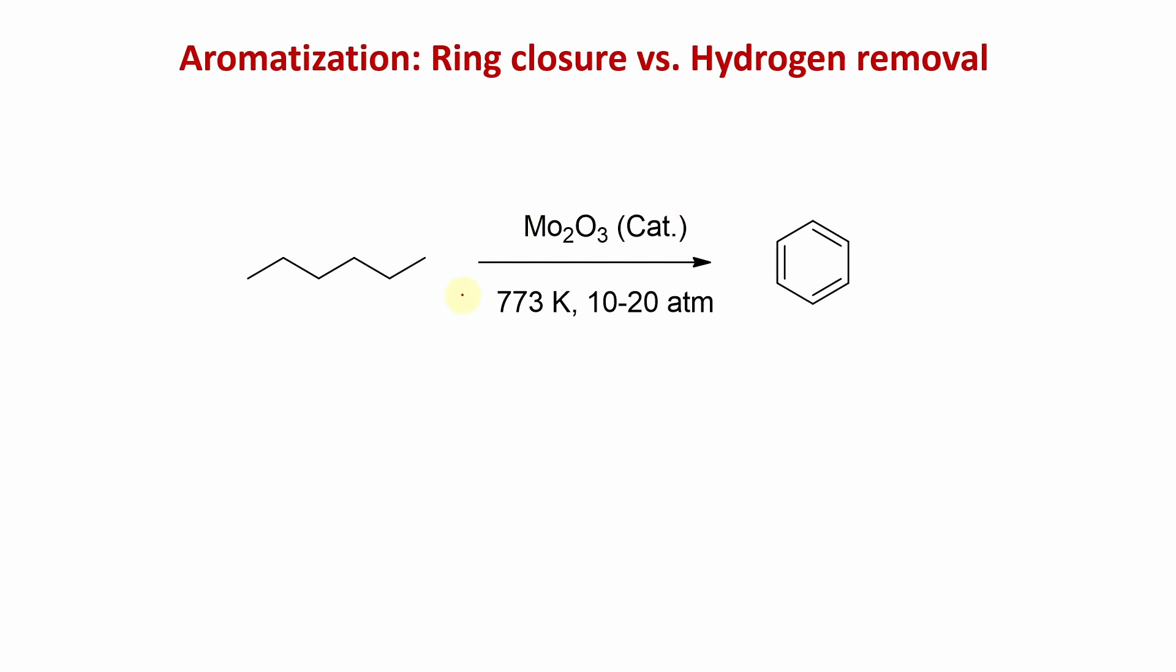All are C7 molecules, but they are isomers. This is linear n-heptane, this is 2-methylhexane, and this is 3-methylhexane. So which one can produce toluene? First, let me explain ring closure versus hydrogen removal.